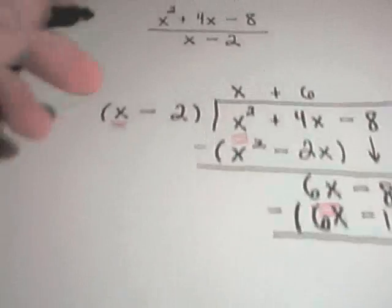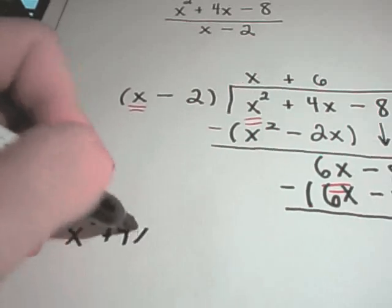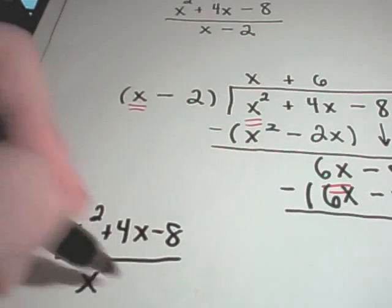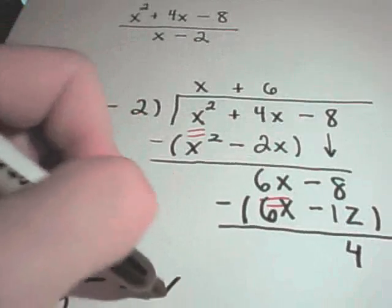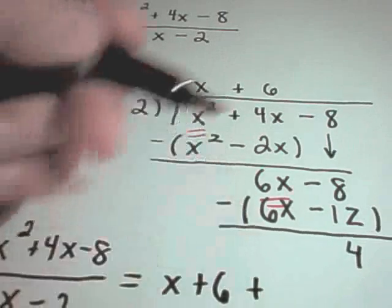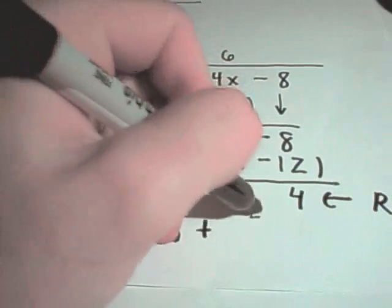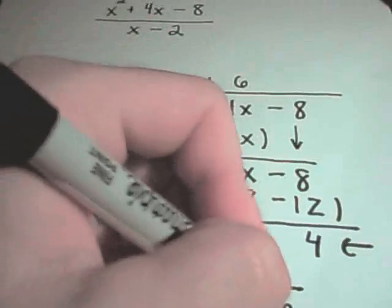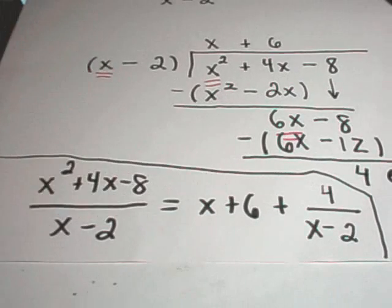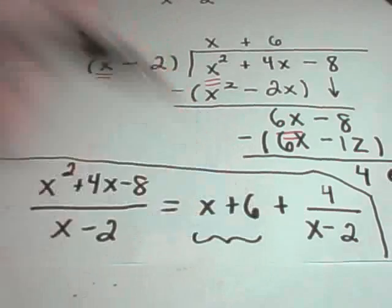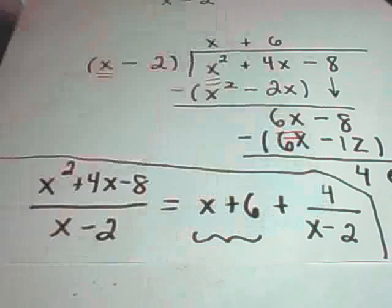So what this says is, in conclusion, this is what we started with, x squared plus 4x minus 8 over x minus 2. It says that we can actually rewrite that as the stuff on top, x plus 6. And then the 4 out here at the bottom is considered our remainder. So we'll write 4 over what we were originally dividing by. So this would be your final solution. The stuff on top is what goes out front. Your remainder goes on top of the fraction, and what you're dividing by goes on the bottom of the fraction.